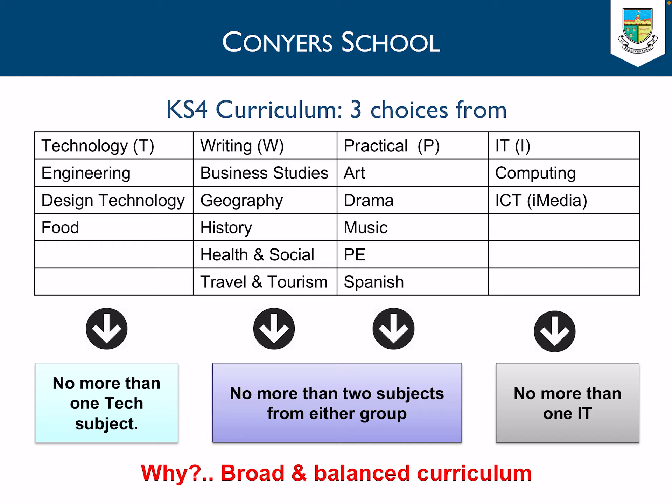This makes sure that students have three options that are varied and manageable — not too writing or essay heavy, or too coursework heavy. For example, a student could choose two writing subjects like Geography and History and a practical subject like Music, but they wouldn't be able to choose three writing subjects like Geography, History, and Business Studies. One thing that's important to note is that there are no easy subjects and all subjects will require hard work from students.